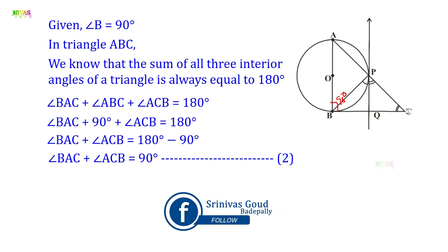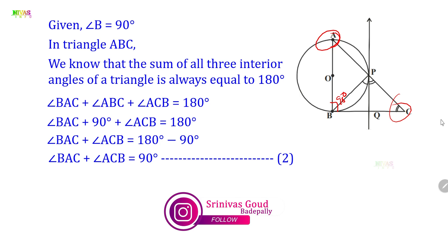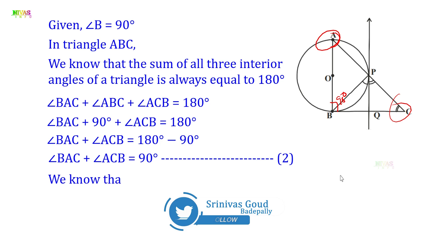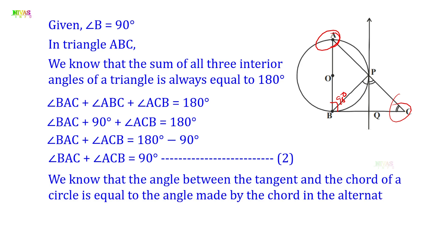Now, we know that the angle between a tangent and a chord of a circle is equal to the angle made by the chord in the alternate segment. Therefore, angle BPQ is equal to angle BAC. Let this be Equation 3.